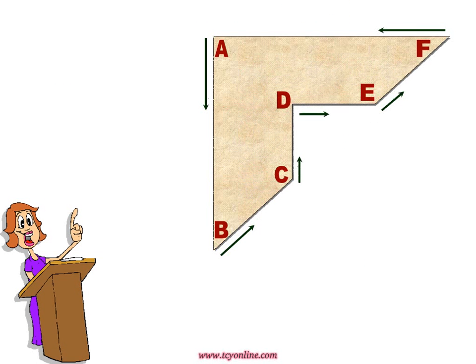A, B, C, D, E, F is a polygon. To measure its perimeter, we need to add the measure of all its sides.